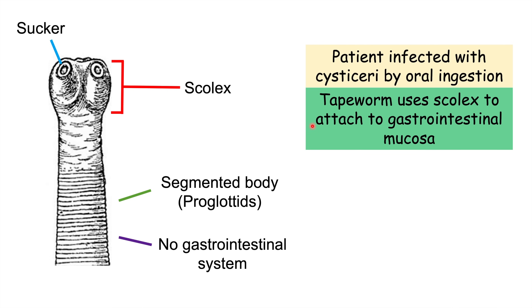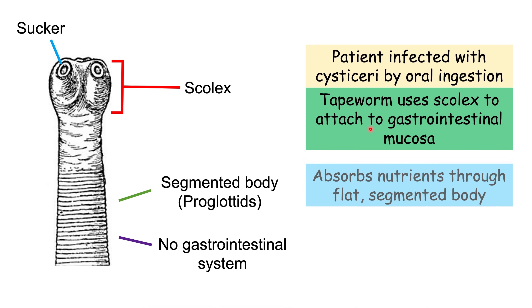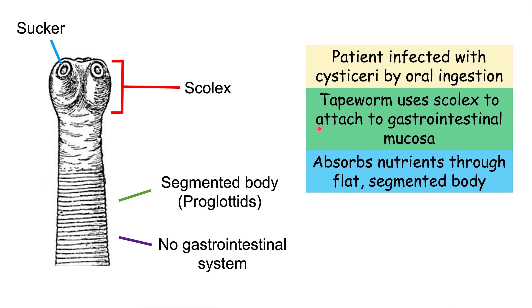The tapeworm then uses its scolex and the suckers, and sometimes a hook, to attach to the gastrointestinal mucosa, which is the inner lining of the intestines. They often reside within the small intestine, hanging there and absorbing nutrients through their flat segmented body because they have no gastrointestinal system.